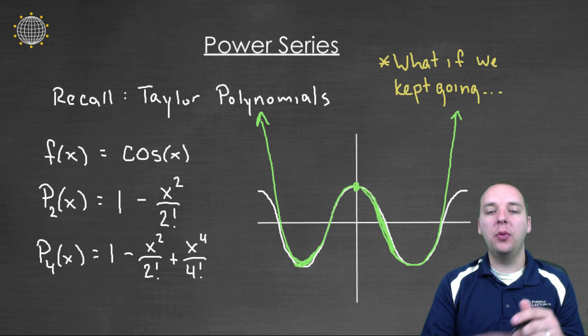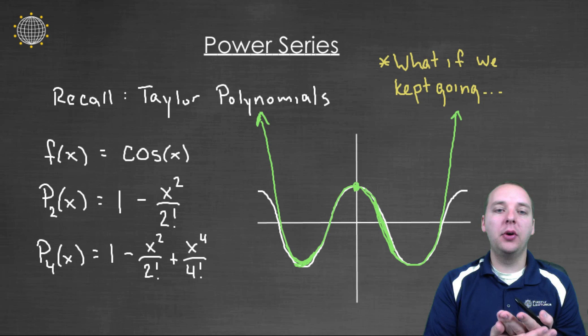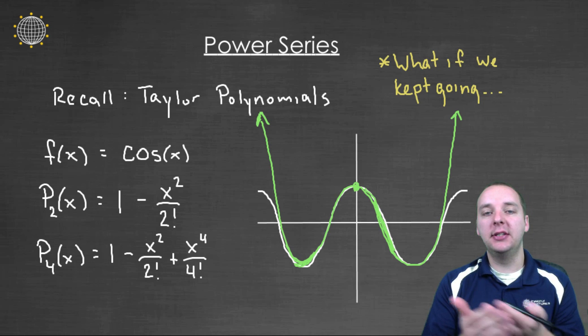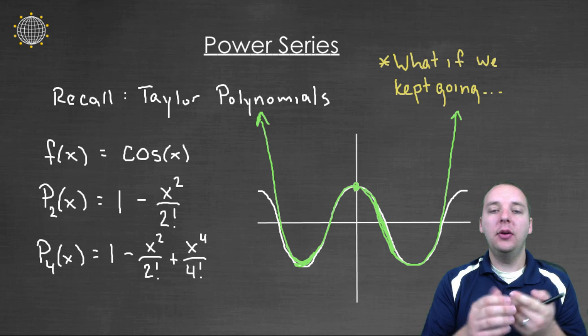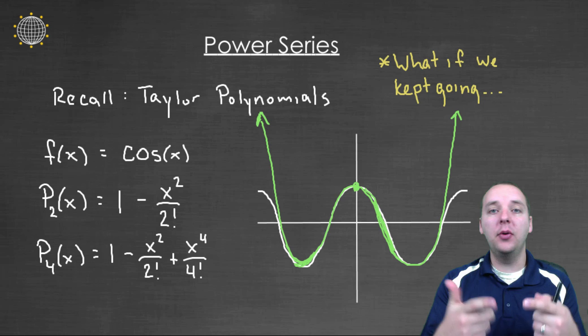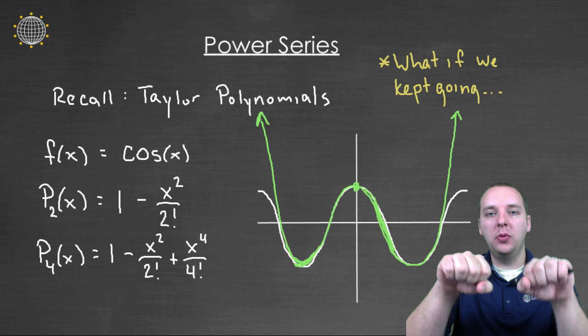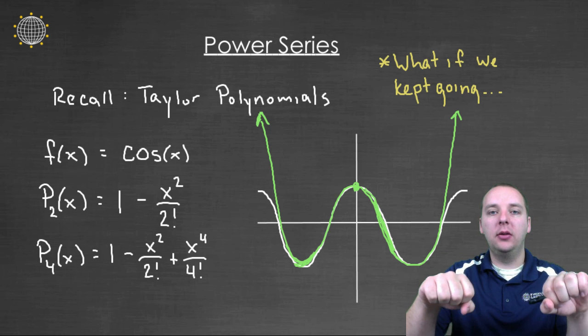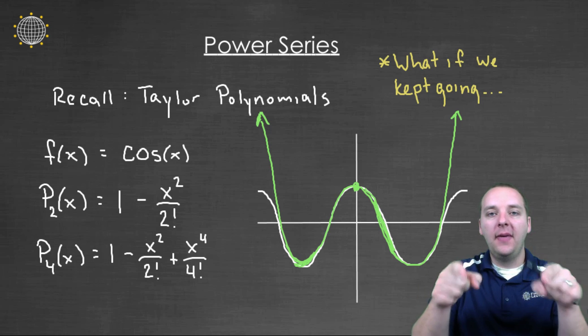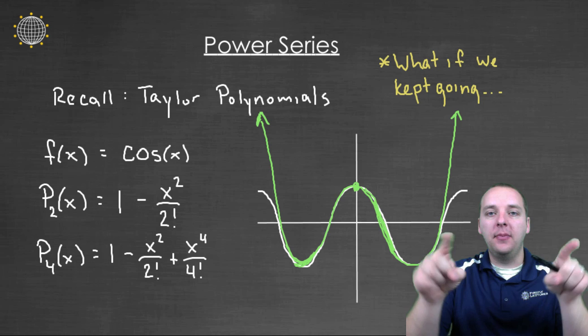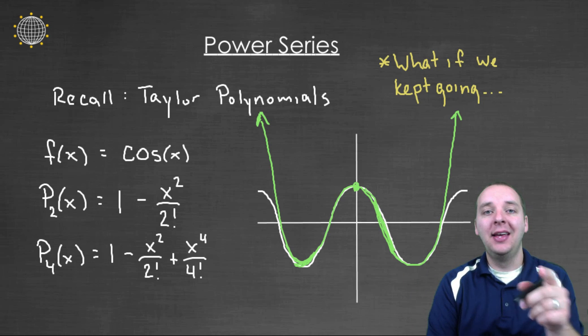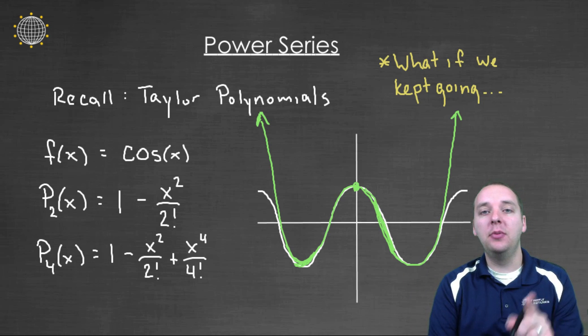What if we kept going, right? What if instead of degree 4, we did a degree 6 or degree 8. And then what if we kept going and kept going even beyond that? And with each increase in degree, you'll notice that the polynomial will bend a little more and bend a little more and wind up basically wrapping around the cosine graph.